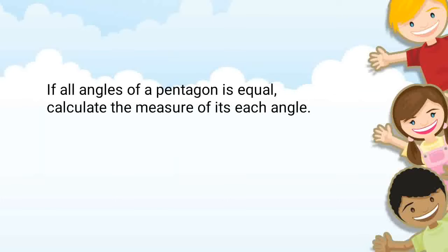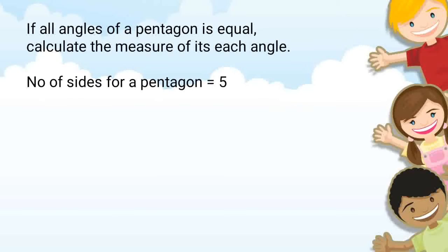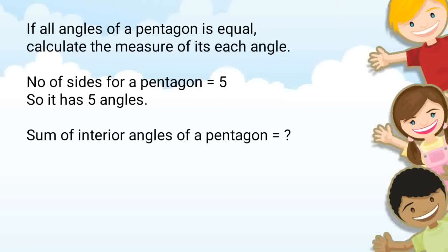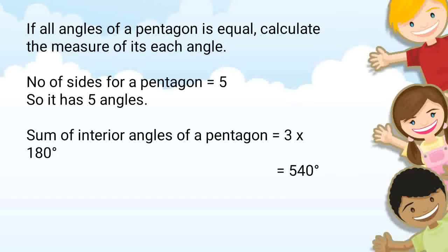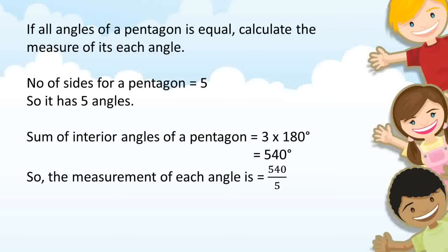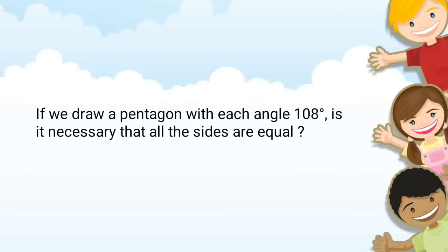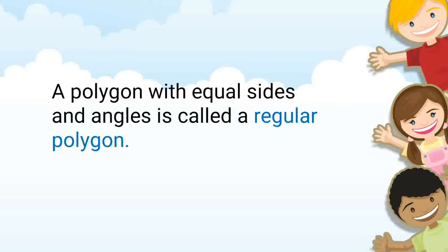If all angles of a pentagon are equal, calculate the measure of each angle. The number of sides of a pentagon is 5, so it has 5 angles. The sum of interior angles of a pentagon is 3 times 180 degrees, equal to 540 degrees. So the measurement of each angle is 540 degrees divided by 5, that is equal to 108 degrees. If we draw a pentagon with each angle 108 degrees, is it necessary that all the sides are equal? Think about it. A polygon with equal sides and equal angles is called a regular polygon.